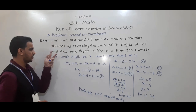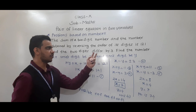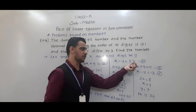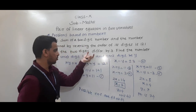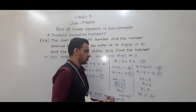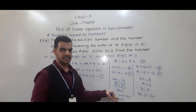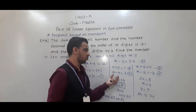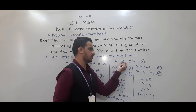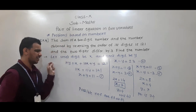So when this type of condition is given — 'the two digits differ by 3' — we have to take x minus y equals plus or minus 3, because we don't know which digit is greater: whether the units digit is greater than the tens digit or vice versa. So we take both equations. Understand this.